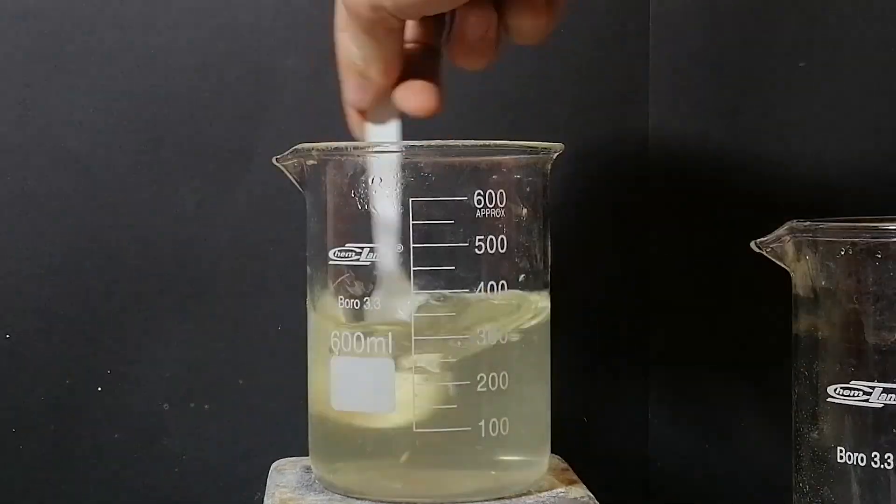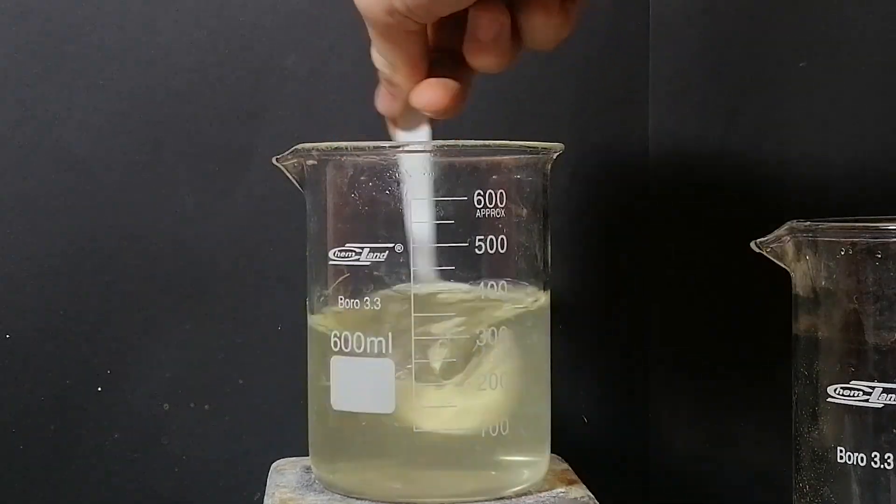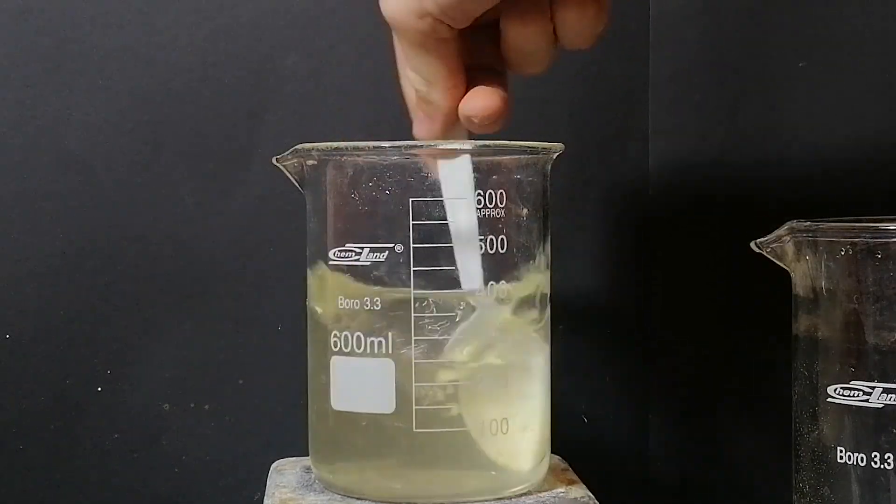At first there was no immediate precipitate, however eventually something started crystallizing. Basically, by adding potassium chloride we're replacing the sodium ion in the chlorate with the potassium ion.